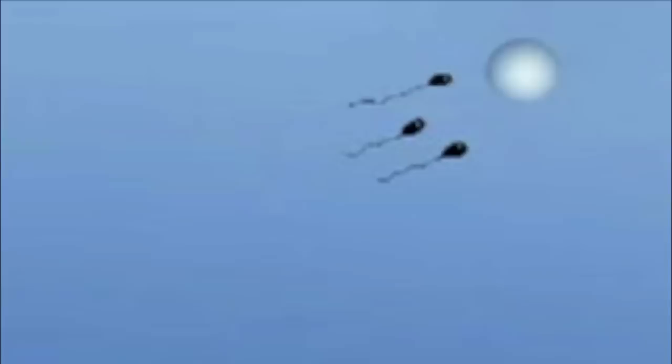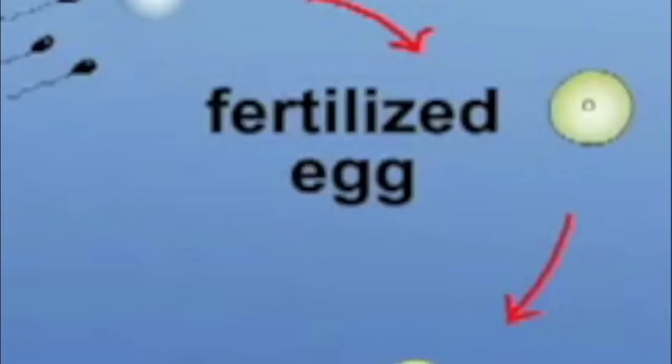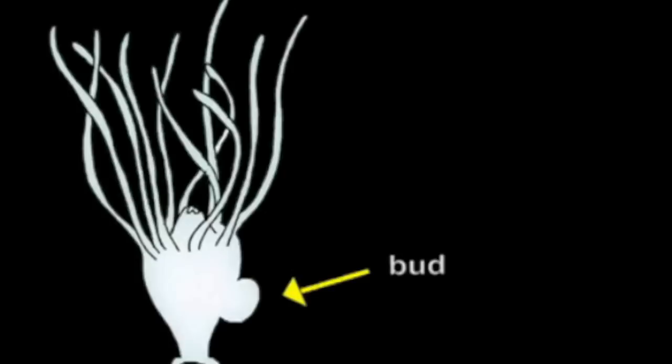Once fertilized, the zygotes emerge onto the oral arms to develop for a time, becoming larvae, which settle on the bottom of the ocean. The resulting polyp begins to bud asexually, releasing free-swimming medusa, which then go on to develop into adults.